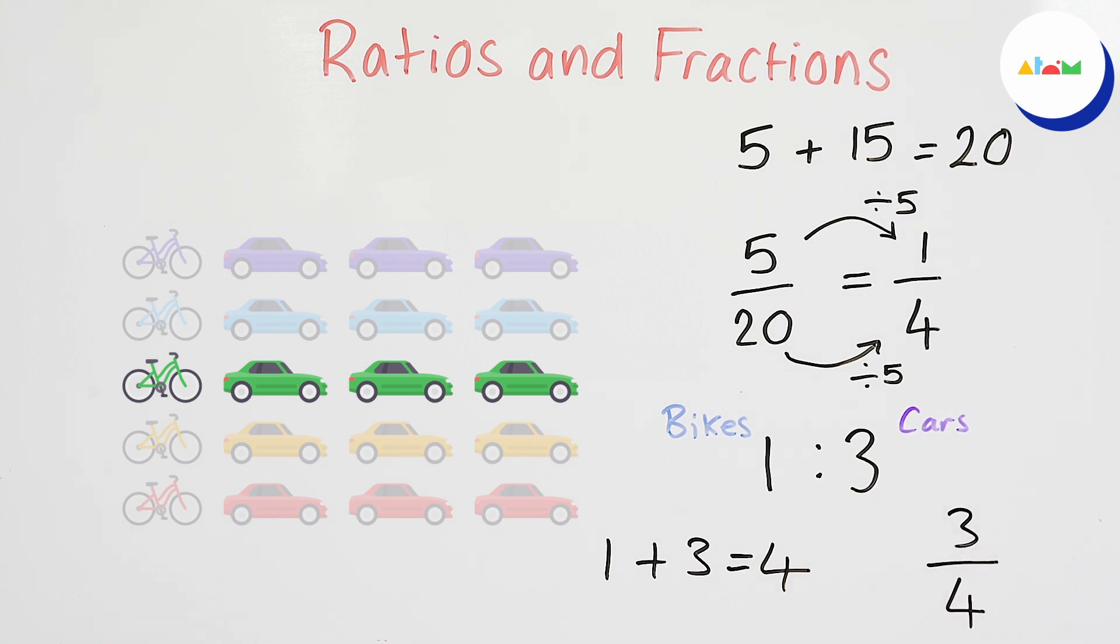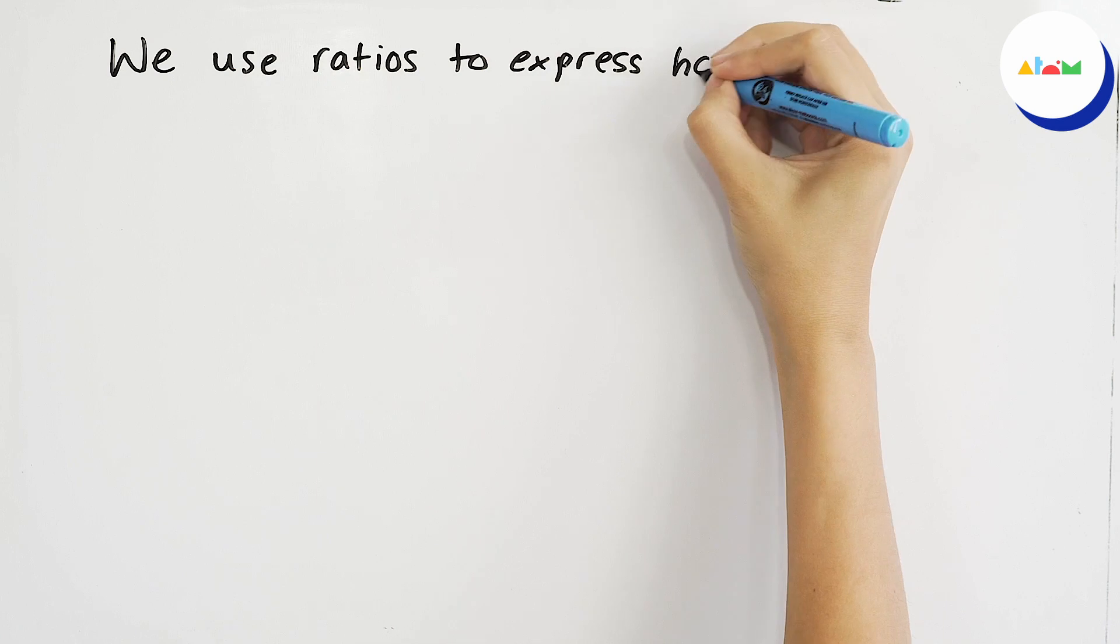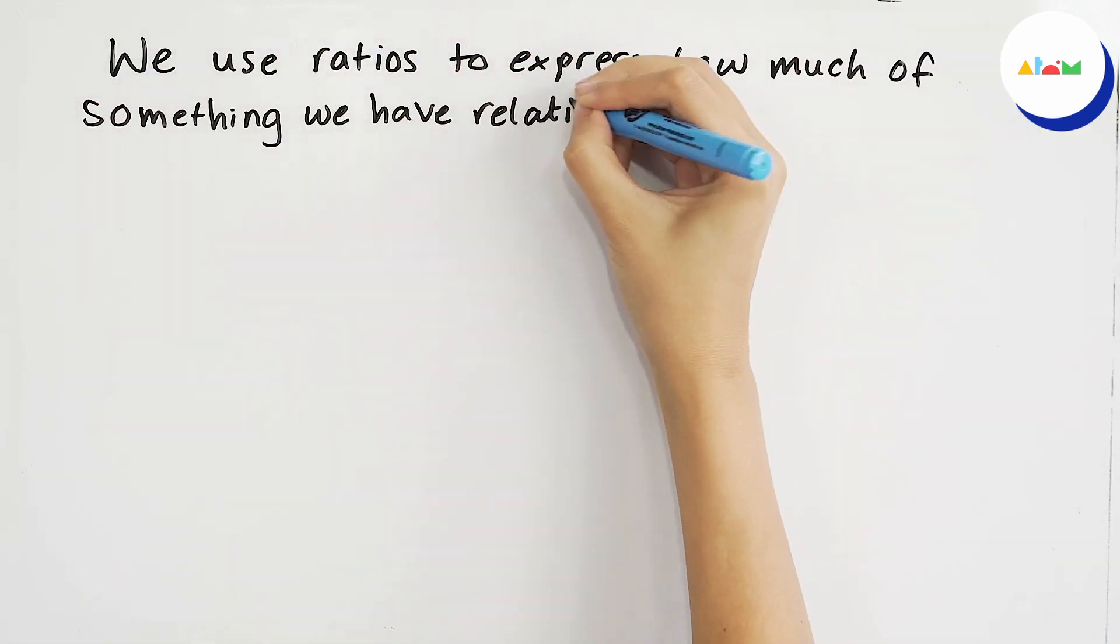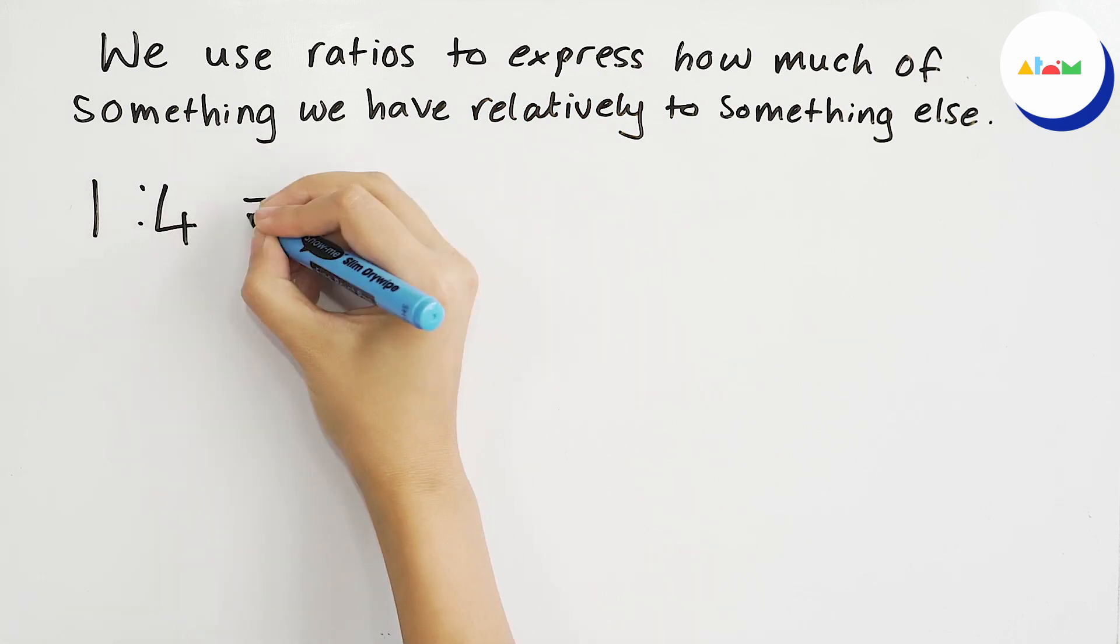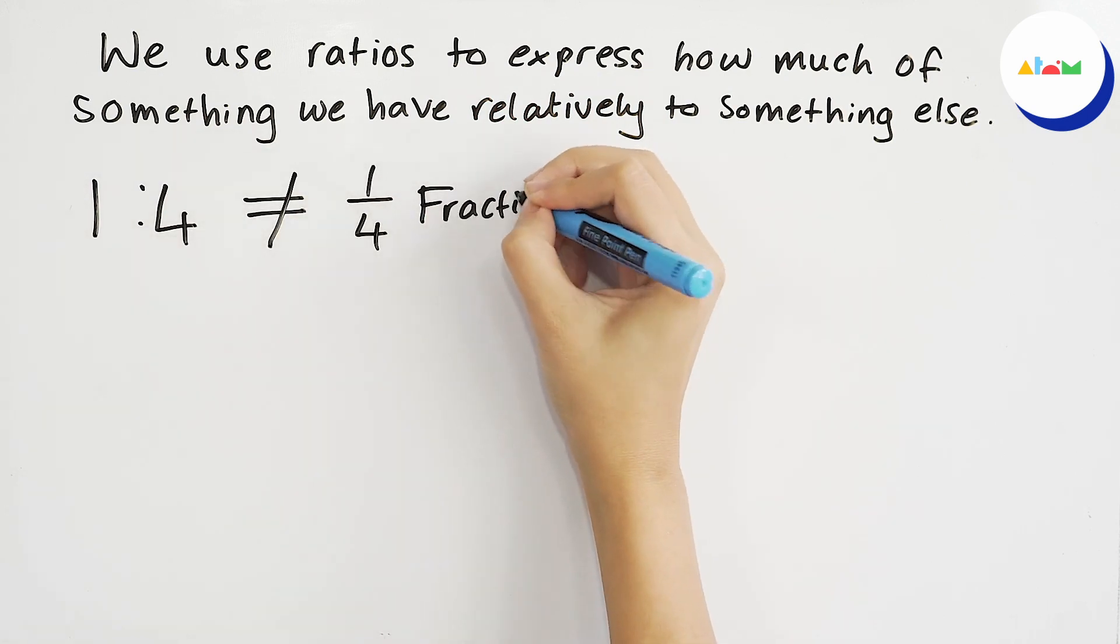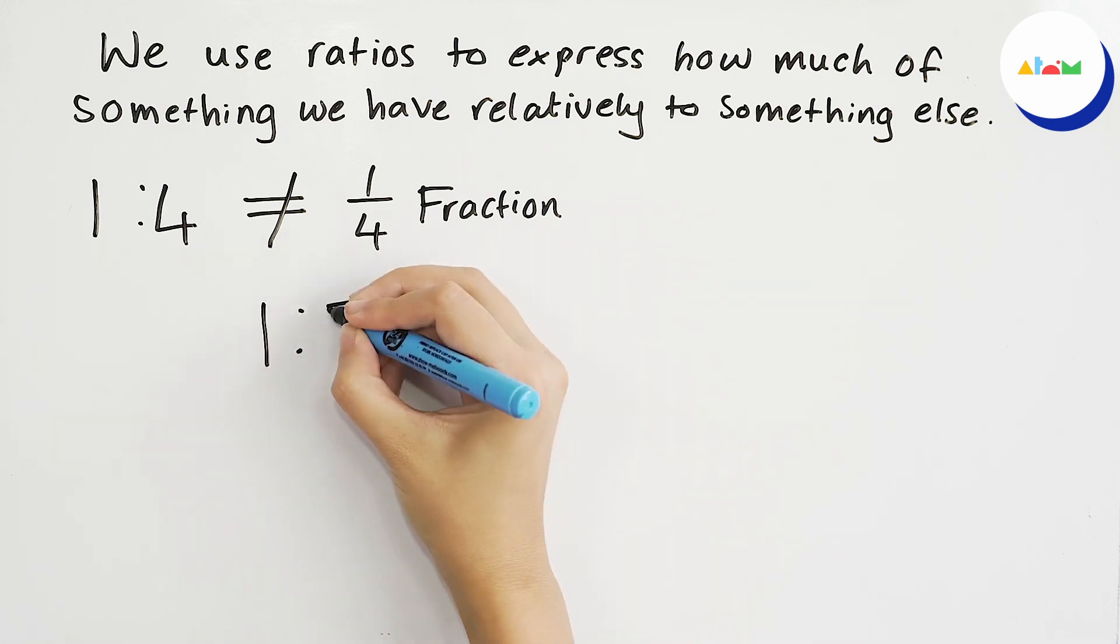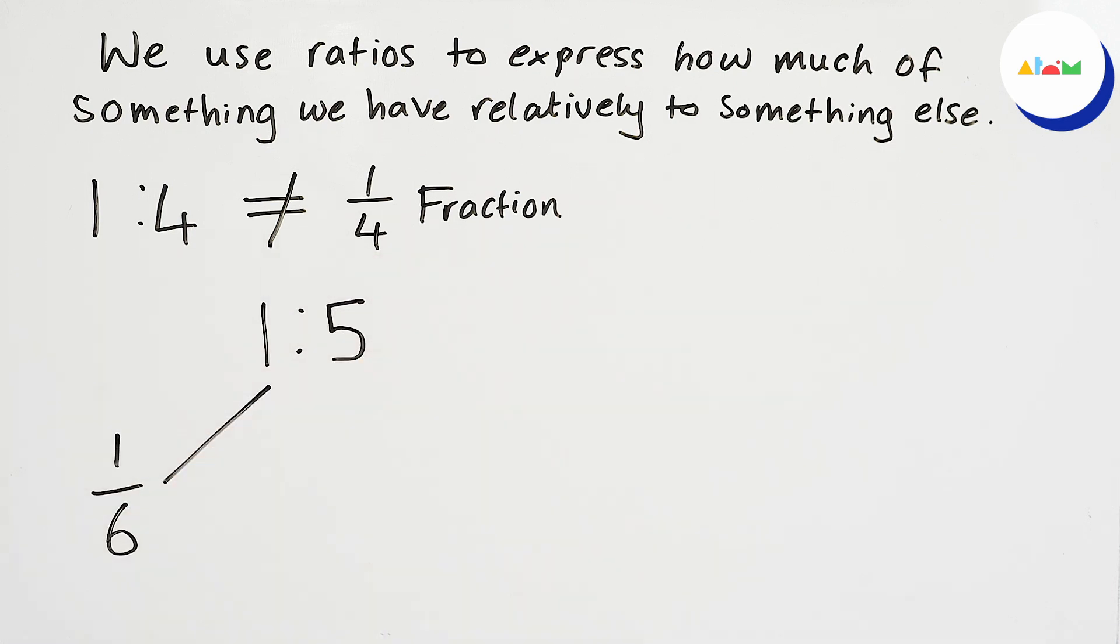Three quarters of the vehicles are cars and the remaining quarter are bicycles. Remember we use ratios to express how much of something we have relatively to something else. Ratios and fractions can express the same information but they do so in different ways. If we want to know what the fraction of something is given a ratio, we need to add all the parts in the ratio together and choose the side of the ratio we need as the numerator.